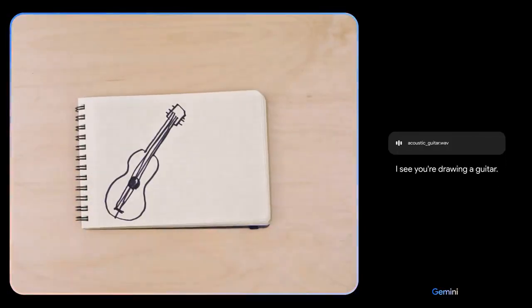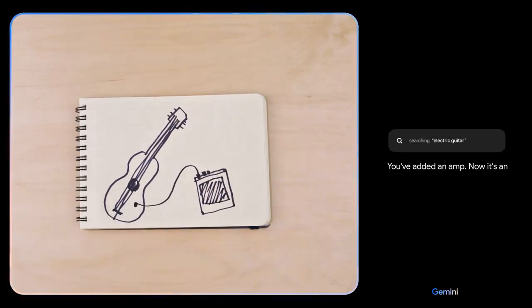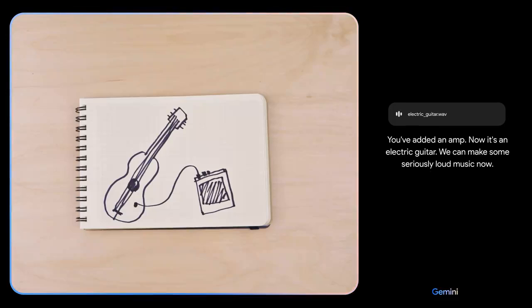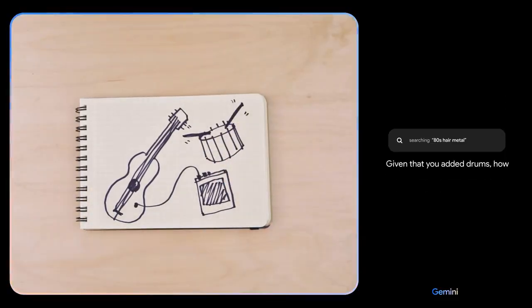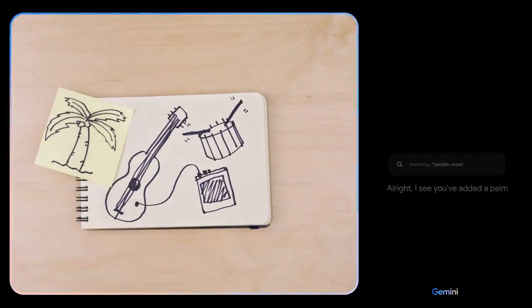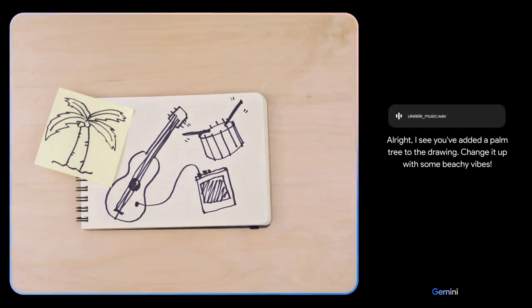I see you're drawing a guitar. You've added an amp. Now it's an electric guitar, we can make some seriously loud music now. Given that you added drums, how about some 80s hair metal? All right, I see you've added a palm tree to the drawing. Change it up with some beachy vibes.